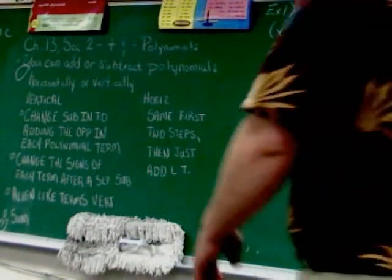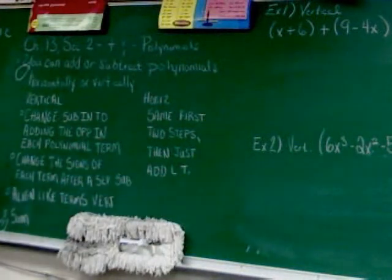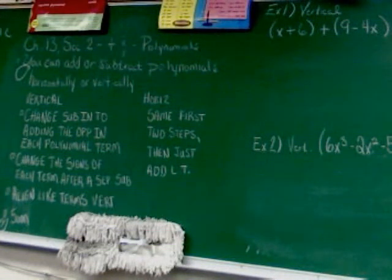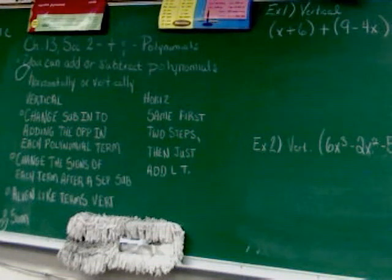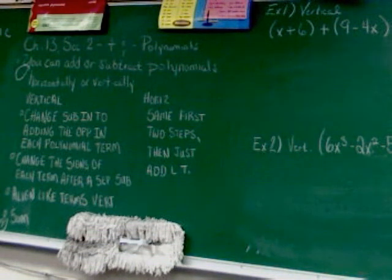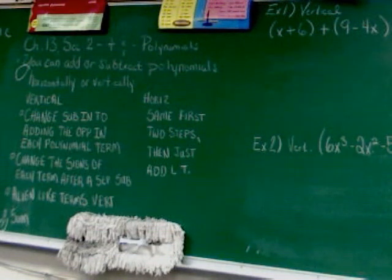Chapter 13 Section 2 is where we're at today. We're studying adding and subtracting polynomials. This is in some ways similar to what we did yesterday, but yesterday we only worked with one polynomial. Now you're going to take a polynomial and put it with a whole other polynomial — that's what we're covering today.